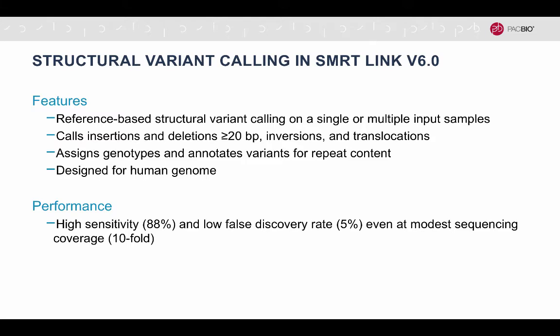The performance metrics in SmartLink 6.0 are a high sensitivity of 88% and low false discovery rate of 5% for all types of variants at even modest sequencing coverage of 10-fold.